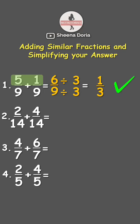Next, 2/14 plus 4/14. Let's add the numerators: 2 and 4 which is 6, then keep the denominator 14. Here,